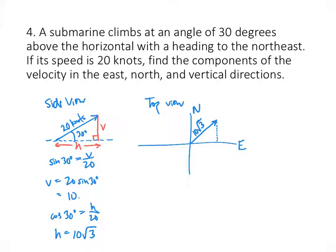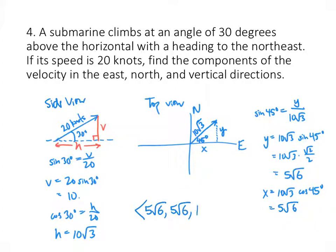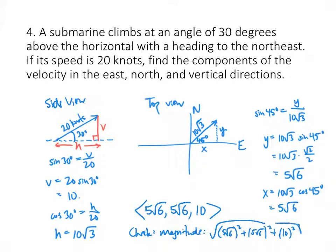Because we're going directly northeast, the angle is 45 degrees. So Y = 10√3 × sin(45°) = 10√3 × (√2/2) = 5√6. Similarly, X = 10√3 × cos(45°) = 5√6. So the X and Y components are both 5√6, and the vertical component is 10. We can verify by checking that the magnitude equals the original speed of 20.